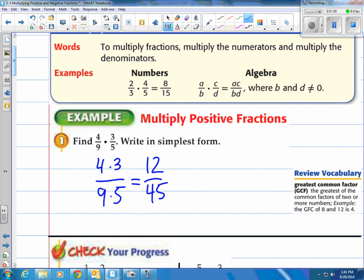And that is equal to 12/45. Oh wait, greatest common factor. This is called reducing. Well, I know that there is a 3 that goes into 12 and a 3 that goes into 45, so this will actually make it 4/15.